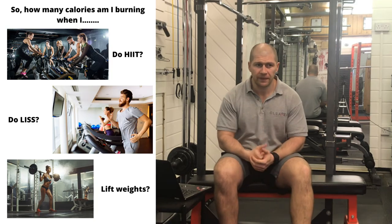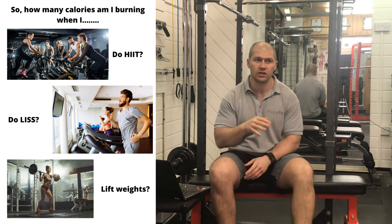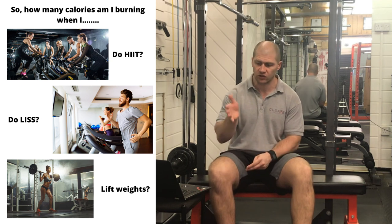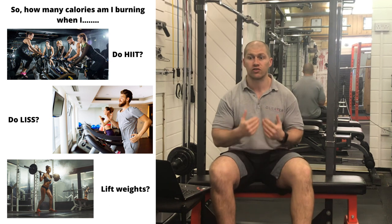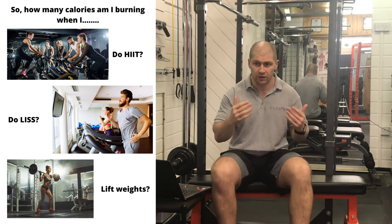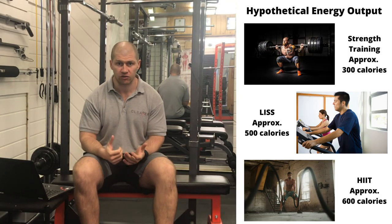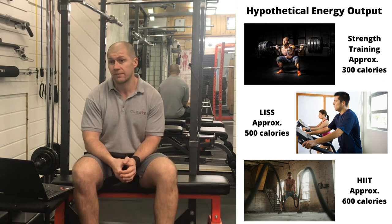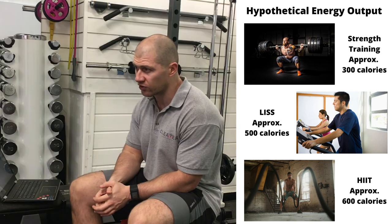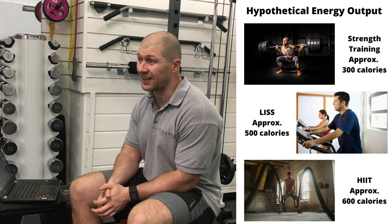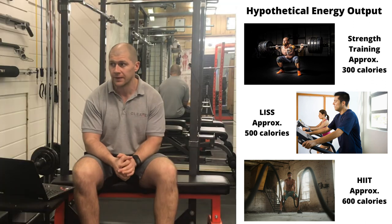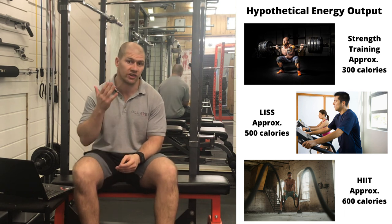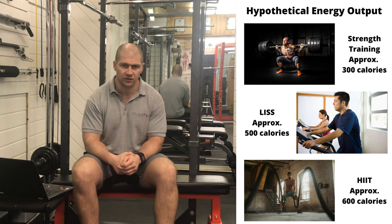The amount of calories these workouts burn is going to vary massively from person to person, and you can't compare a five-foot female to a six-foot-four male because their energy demands are massively different. But just to throw some numbers out there for myself: a one-hour strength training session probably burns about 300 calories; a 60-minute low intensity steady state cardio session maybe 500; and a 30-40 minute HIIT workout is probably around the 600 calorie mark. Because you're condensing the time, it's not going to be too much more than the low intensity steady state stuff — it's just a bit more time efficient.